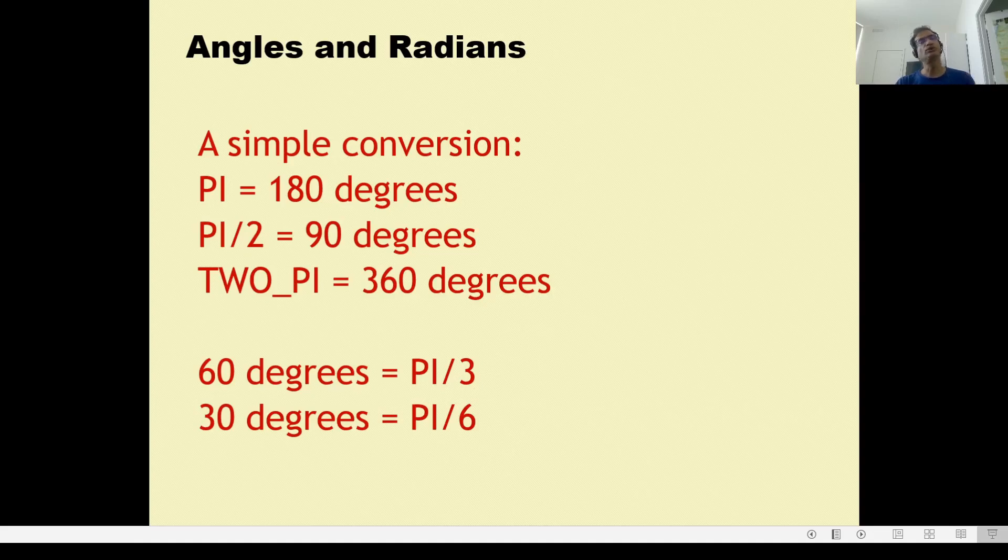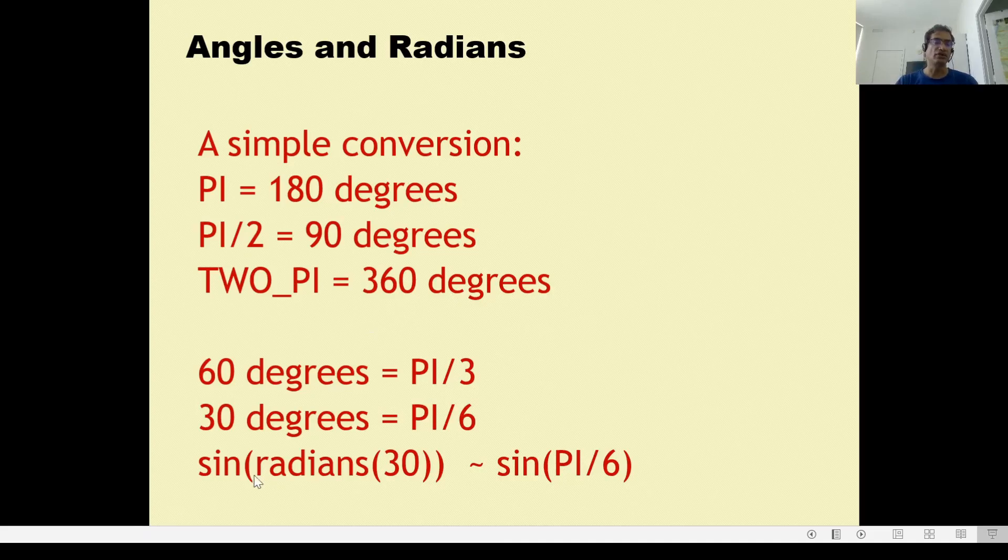And 30 degrees again is pi divided by 6 as we saw. So if you wanted to do sine of 30 degrees, normally you would have to do sine of radians of 30 because by default processing uses radians. So first, if you put it in degrees, you want to convert it to radians and then calculate the sine. But it's better and easier if you can remember that if you just say sine of pi by 6, that's already in radians. So processing will do the right thing and it will calculate what you want.